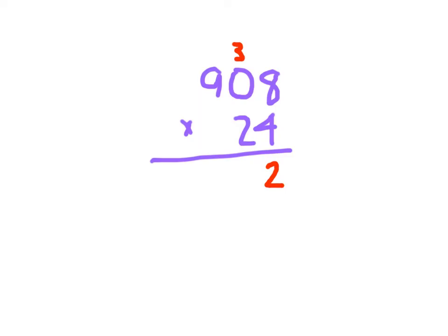4 times 0, which is 0, plus 3, which is 3, and 4 times 9, which is 36. We remember to cross out our regroups.